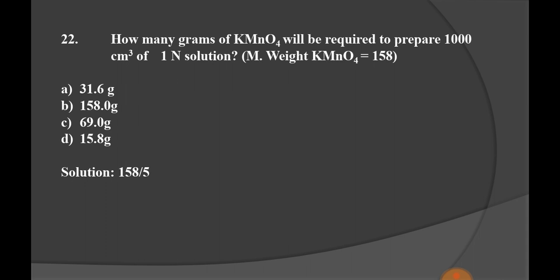How many grams of KMnO4 will be required to prepare 1000 cm³ of one normal solution? Molecular weight of KMnO4 is 158 grams. Options: A 31.6 grams, B 158.0 grams, C 69.0 grams, D 15.8 grams. We know that normal solution is prepared by dissolving 1 gram equivalent weight of given solute into 1 liter of solution. Equivalent weight of KMnO4 is calculated as molecular weight divided by number of electrons transported. In case of KMnO4, equivalent weight is 31.6 grams. Option A is the right option.